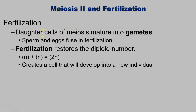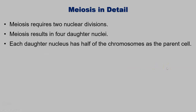Fertilization is when you get those daughter cells of meiosis that mature into gametes — sperm in males and eggs in females. Sperm and eggs fuse during fertilization, which restores the diploid number of chromosomes. Haploid plus haploid equals diploid, and that creates a cell that will develop into a new adult individual. Meiosis requires two nuclear divisions, meiosis I and meiosis II, and results in four haploid daughter cells.